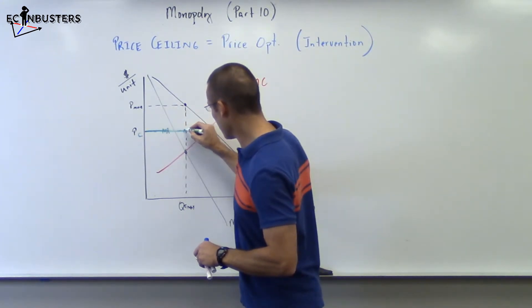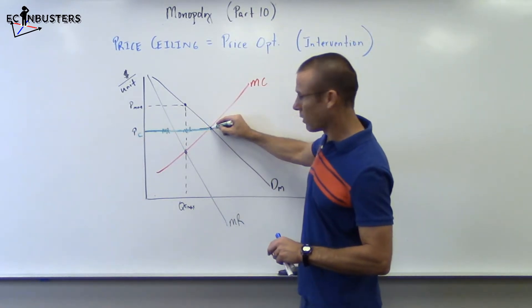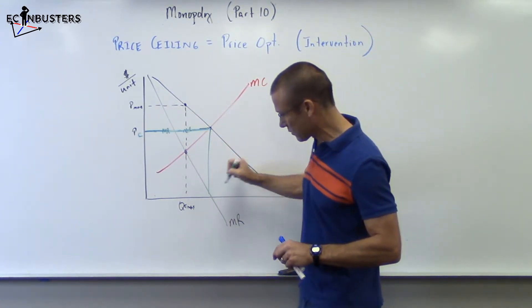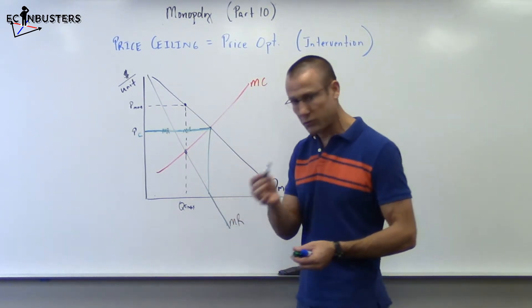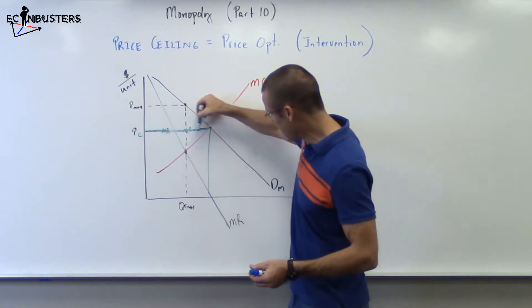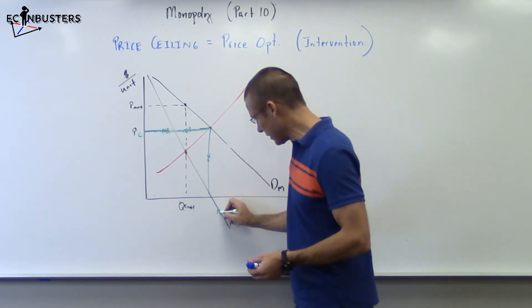Now once I hit the demand curve, I dropped straight down. We saw this in the last video to the old MR curve. So this green line I just drew, this thing right here, MR, MR. Now we're back on the old MR line.